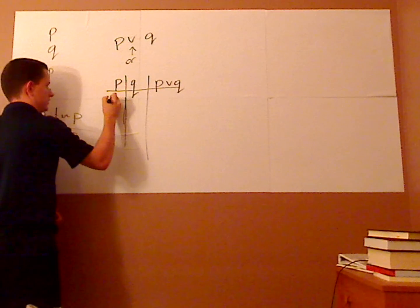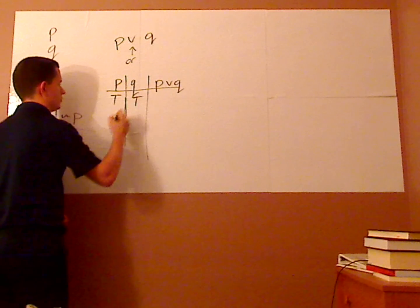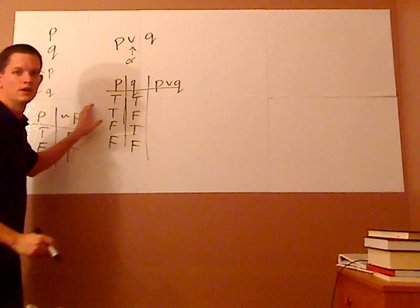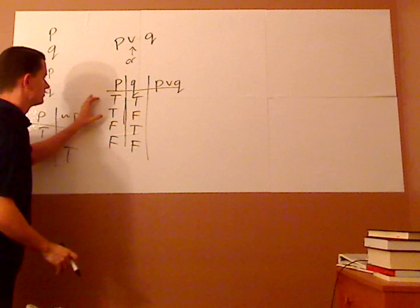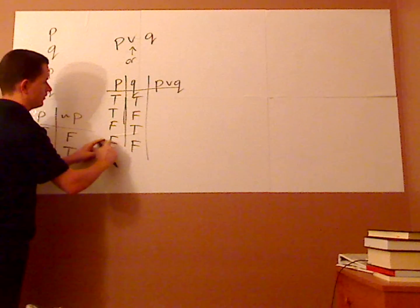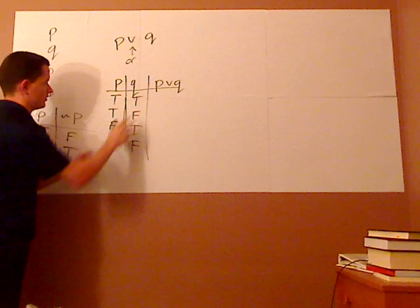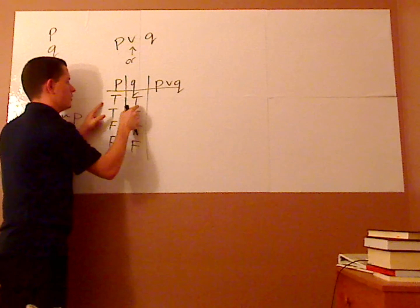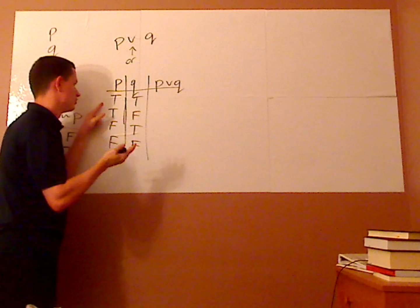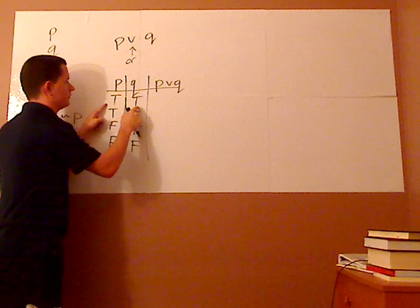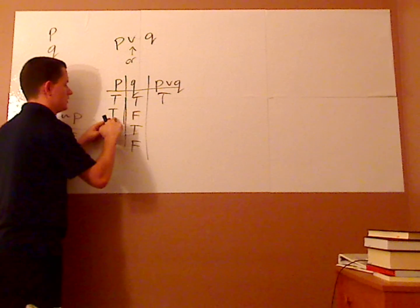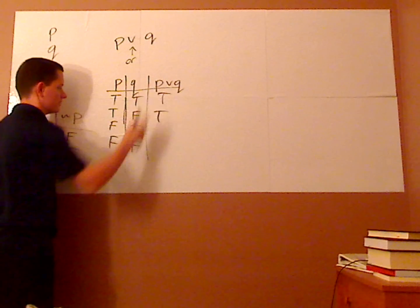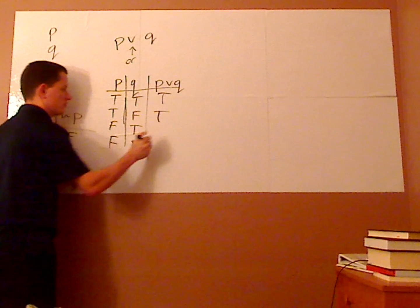In the truth table for P or Q, you list out all the scenarios: P true and Q true, true and false, false and true, false and false. When looking at OR, only one of them has to be true in order for the statement to be true overall. So P or Q when both are true is true; true or false is true; false or true is true; and false or false is false.